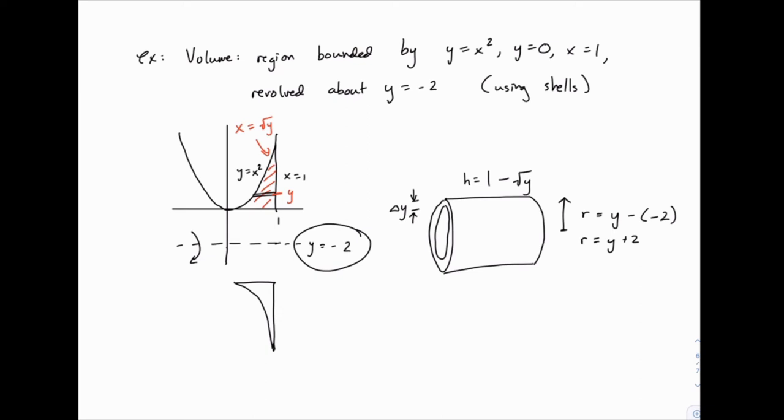So with a shell problem, the hard part is always getting those pieces figured out. If you can figure out the radius, and you can figure out the height, you're pretty much done. But that's the tricky part. So if you need to go over this a few times, you can pause and go back, and make sure that those pieces make sense to you.